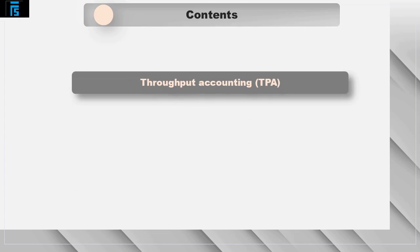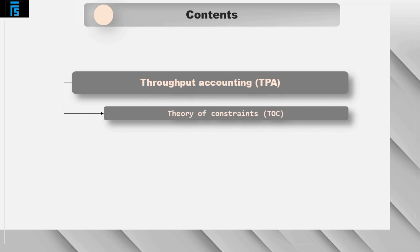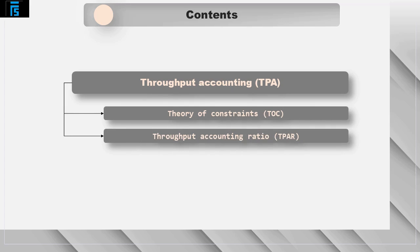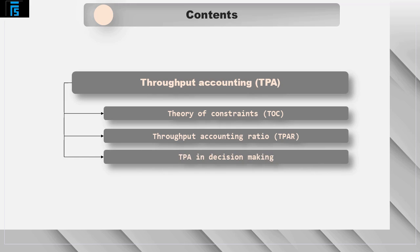In this session we are going to cover the topic of throughput accounting. We are going to discuss and apply the theory of constraints, calculate and interpret the throughput accounting ratio and suggest how this ratio could be improved, and we will also apply throughput accounting to a multi-product decision-making problem.